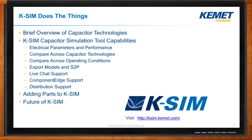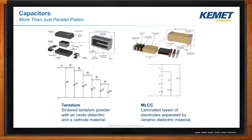Why would I need something like this? That's a good question, and it really has to do with the fact that capacitors are not just parallel plates — there's a lot more that goes into it. On the tantalum side, a tantalum capacitor at its core is a slug of sintered tantalum powder with an oxide dielectric and then a cathode material grown on the other side, and its equivalent circuit model is an RC step ladder topology. Whereas an MLCC is essentially laminated layers of electrodes separated by ceramic dielectric material, with a lumped circuit element RLC model.